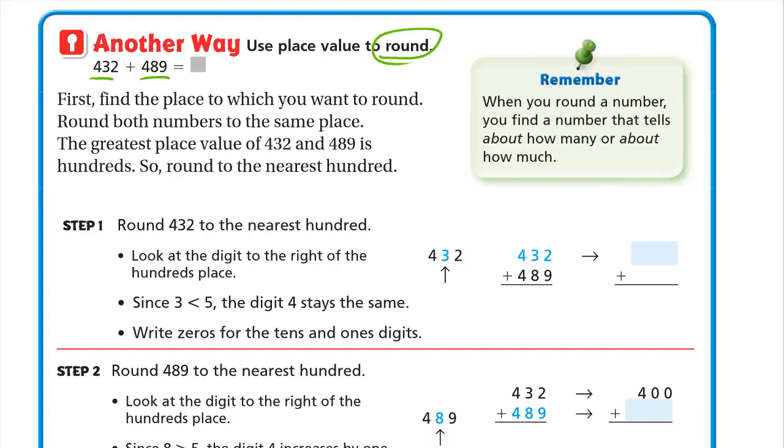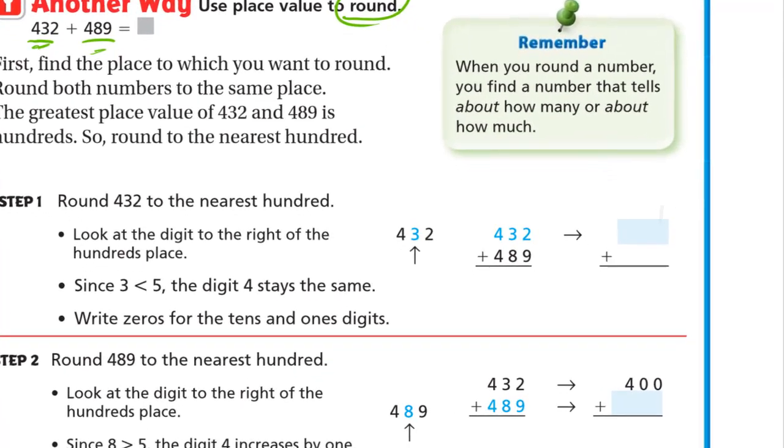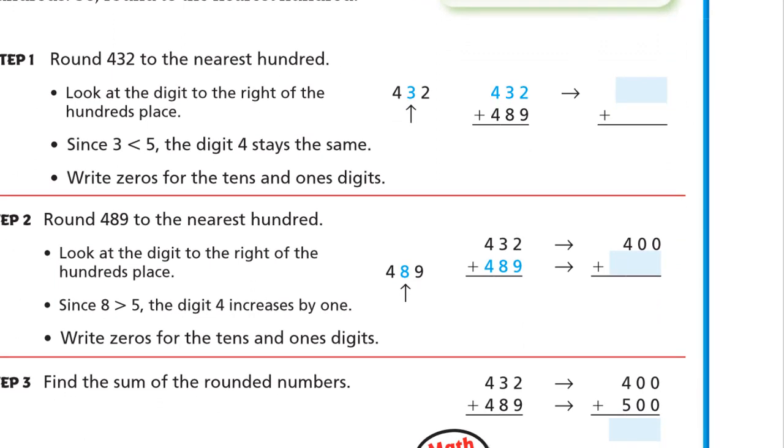Another way: use the place value to round 432 and 489. Rounding is like the last lesson. First find the place to which you want to round. Here we have hundreds and here we have hundreds also. 432 rounded to the nearest hundred, it will be 400 or 500. How do we know? We look at the 3.